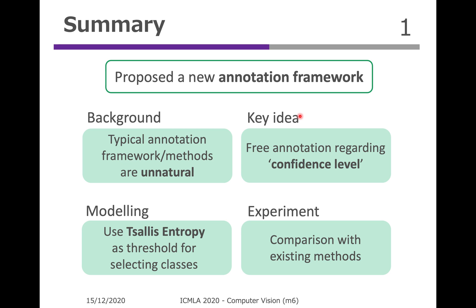This is the summary of our study. We proposed a new annotation framework and have come up with a model to describe the framework. The background of our study is the fact that typical annotation frameworks are unnatural. Our key idea here is allowing annotators to generate labels freely regarding their confidence level in annotation. Our model uses Tsallis entropy as a threshold for selecting classes. In the experiment section, we provide comparison results with other typical annotation methods to demonstrate the novelty of the proposed method.